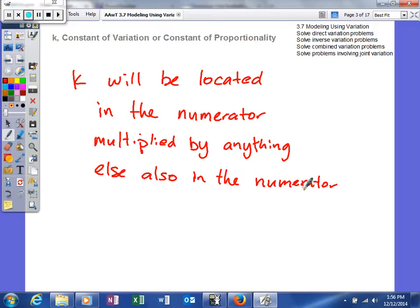K will always be located in the numerator and multiplied by anything else also in the numerator. It's important to know because every single one of our problems will have a K. Most of the problems we're going to have to do, we're going to have to find K and then use K to help us predict in the future.